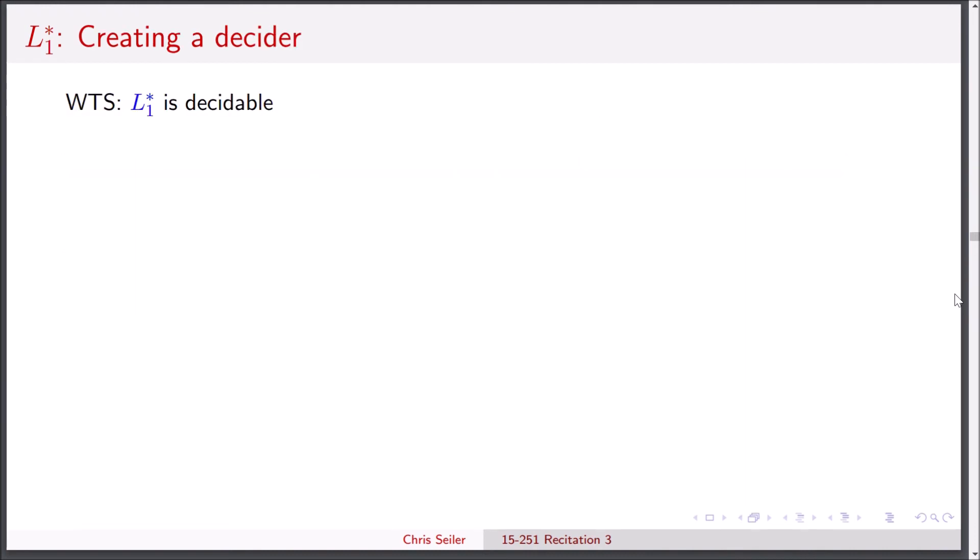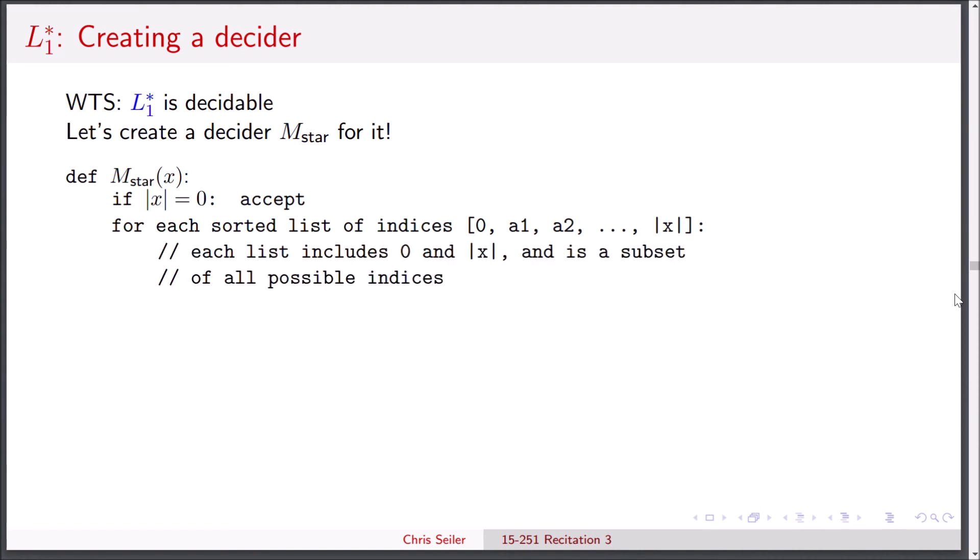Now let's go ahead and create the actual decider. Let's call it M star. When we're given a string x, first we're going to check if x is empty. And if it's empty, we accept because of what we just said. If x is non-empty, we're going to look at every sorted list of distinct indices which contains 0 and the length of x. Just a way to break down x into non-empty substrings.